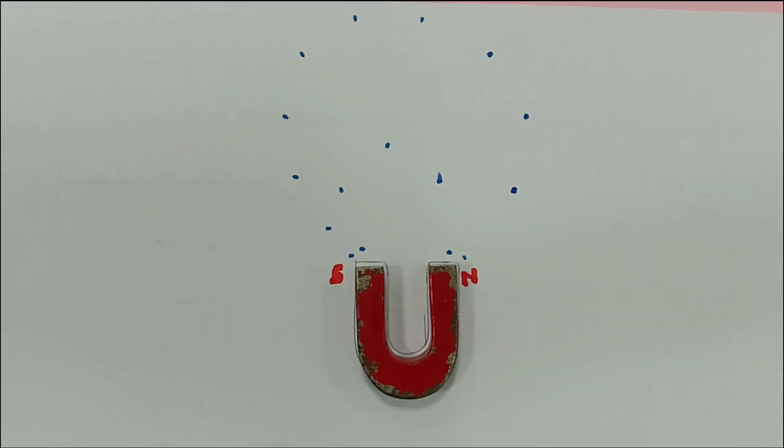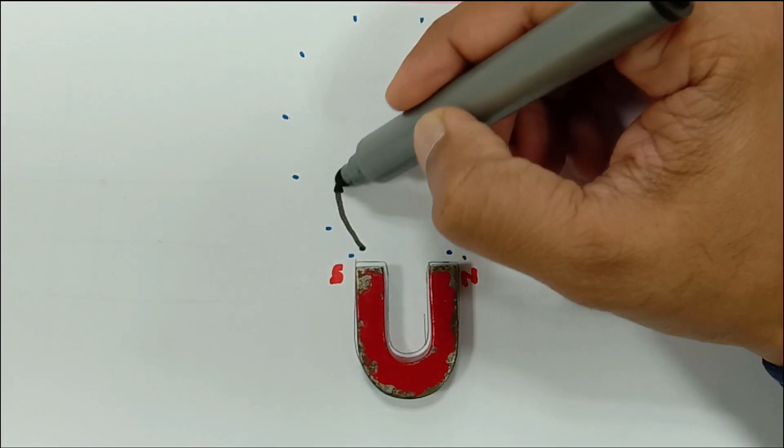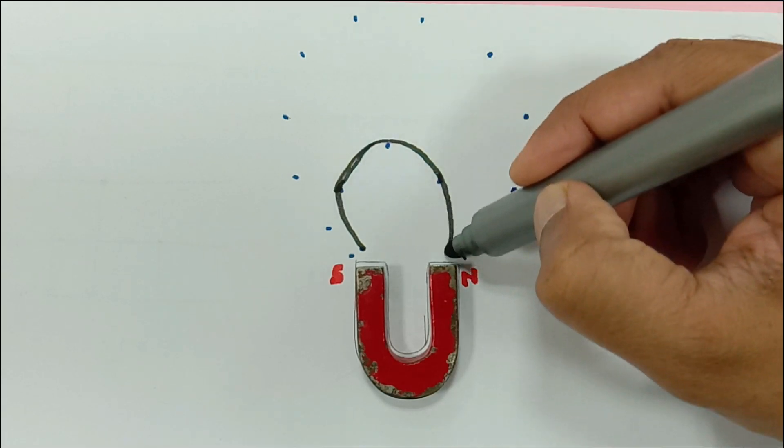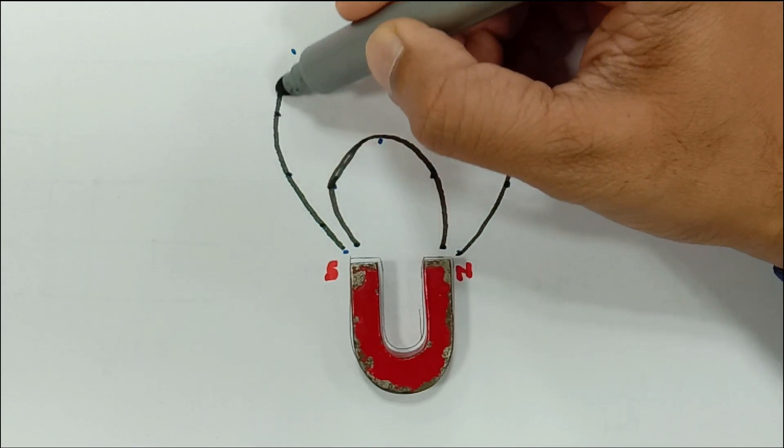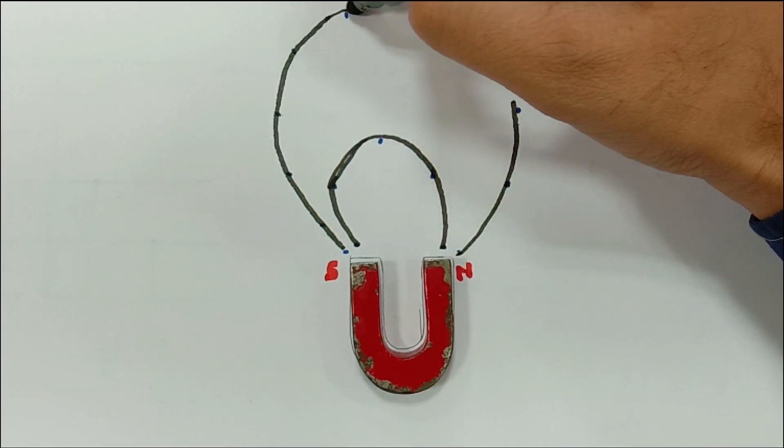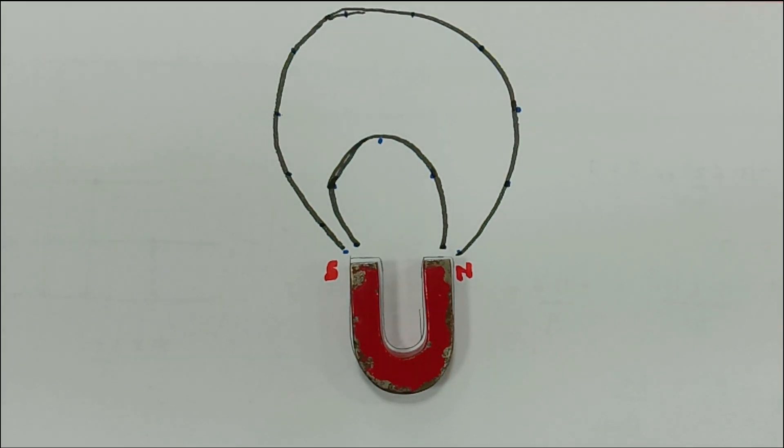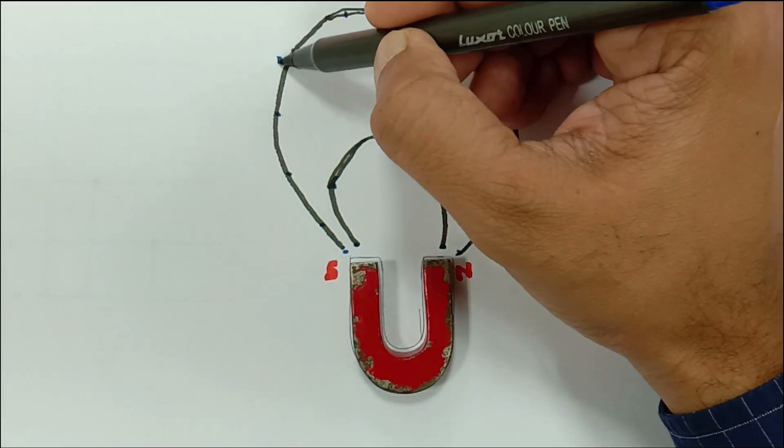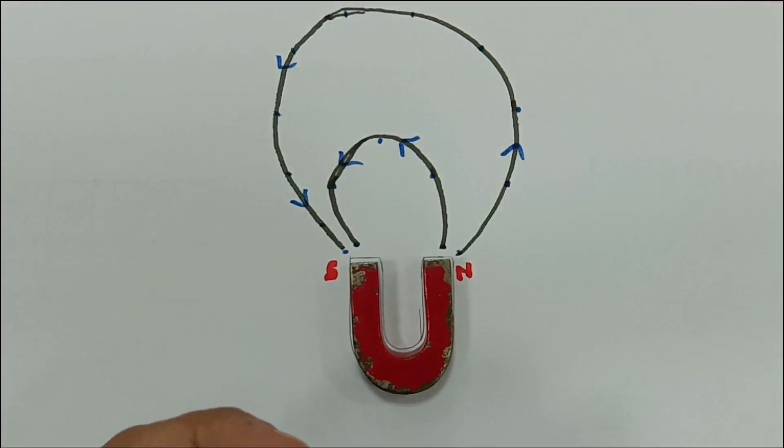So, this is the first line magnetic field line, and since we know that the magnetic field lines they originate from north and they go towards south, right. Now let's continue.